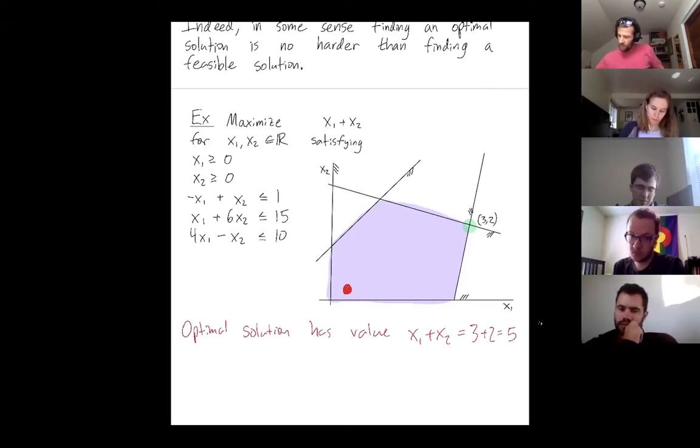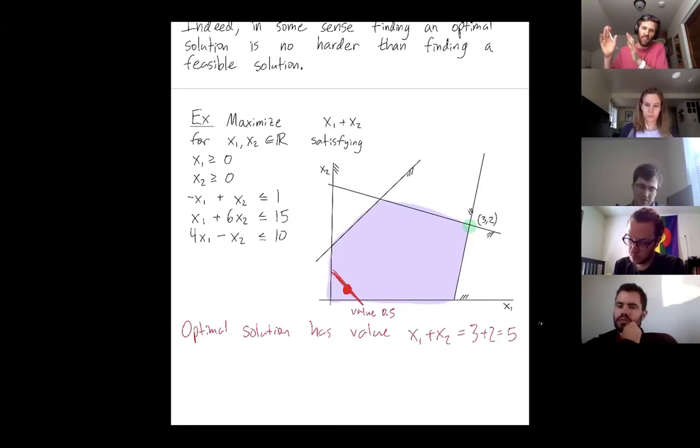We found a solution whose value is maybe 0.5. Not a very good value. We asked our oracle to give us any solution. It gave us a solution that doesn't have a very good value. How do we find a better solution?